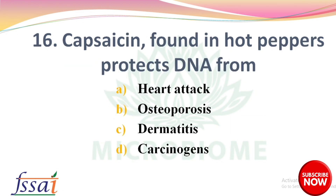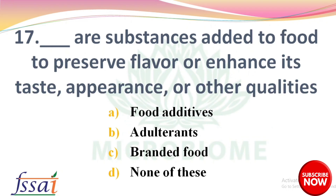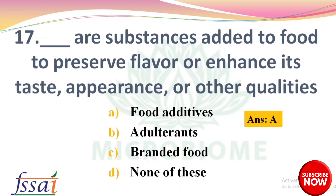Next question: capsaicin found in hot peppers protects the DNA from — options: heart attack, osteoporosis, dermatitis, carcinogens. The right answer is option D, carcinogens. Next, dash are substances added to food to preserve the flavor or enhance its taste, appearance, or other qualities — options: food additives, adulterants, branded food, none of these. The right answer is option A, food additives.